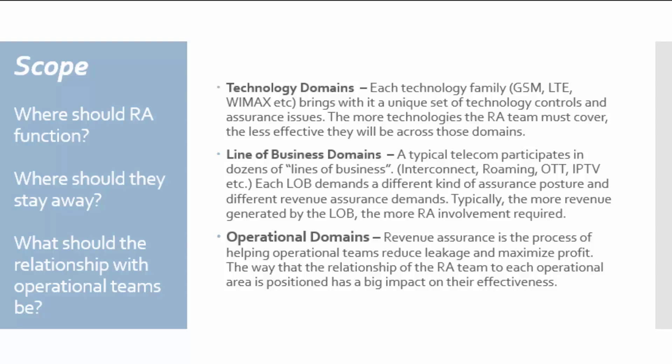The second scope issue is line of business domains, which is very controversial. Some of the biggest needs for revenue assurance are in specific lines of business like interconnect, roaming, OTT, and IPTV — areas where partner relationships, technology complexity, and billing and settlement complexity call out for significant revenue assurance functionality. However, because of the politics of those lines of business, revenue assurance often does not get invited. Finally, there are operational domains — revenue assurance is a political and people process. The operational domains you declare as in scope are the places where you can expect to get the best results.